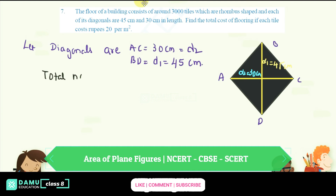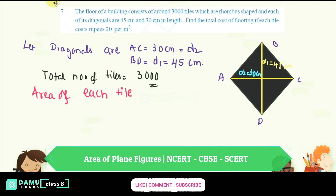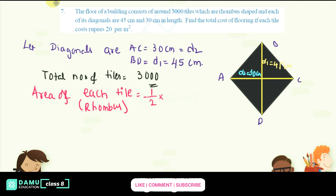The total number of tiles is 3000. If we find the area of each tile, then we can find the total area for all tiles. Area of each tile — since it is rhombus-shaped — the formula is: half into d1 into d2.